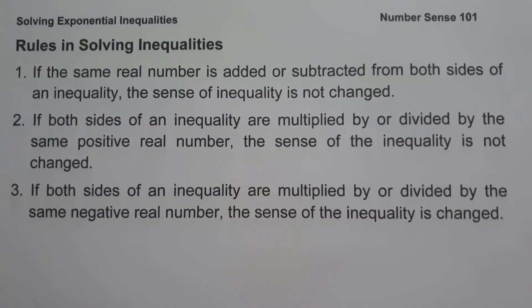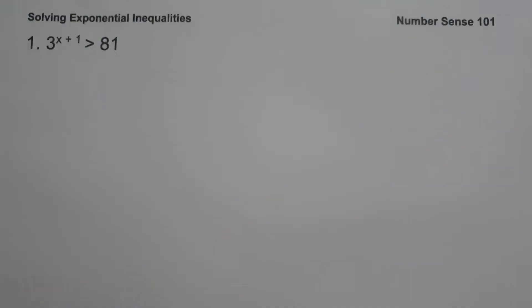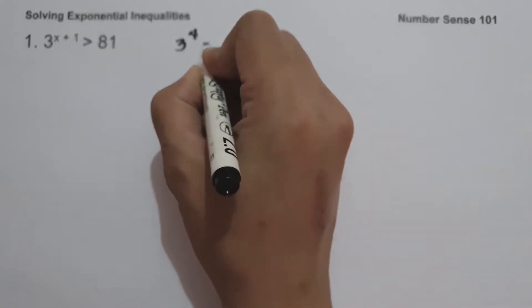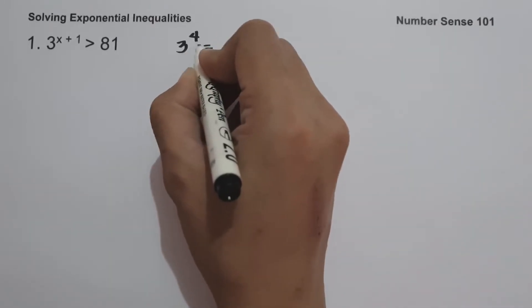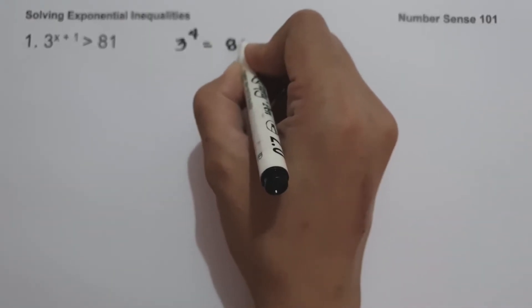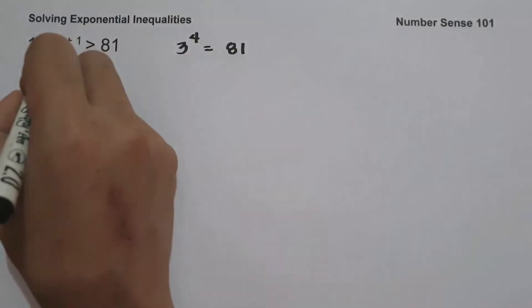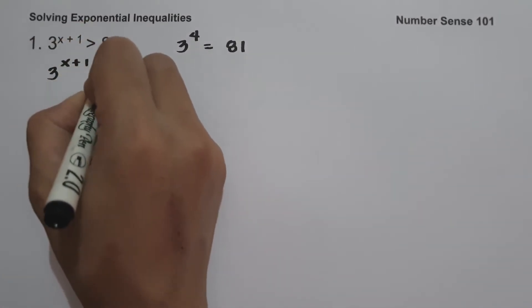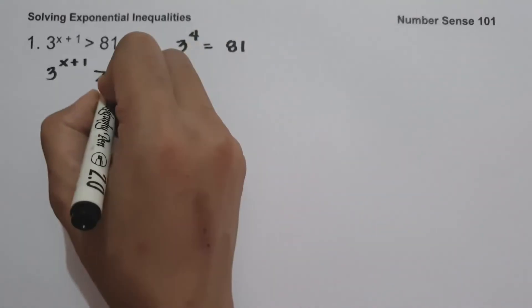Let's start with example number 1: 3 raised to x plus 1 is greater than 81. To solve for x, we must have the same base, so let us write 81 as 3 raised to 4, since multiplying 3 by itself 4 times gives us 81. So we have 3 raised to x plus 1 greater than 3 raised to 4.